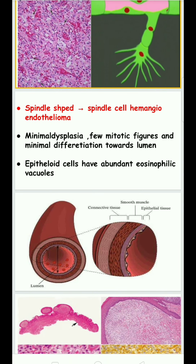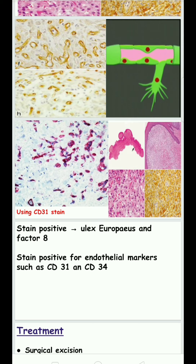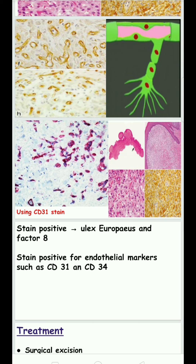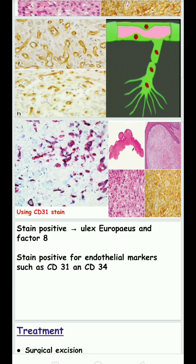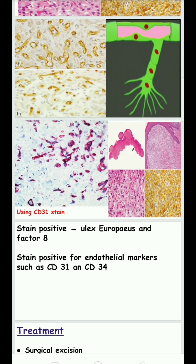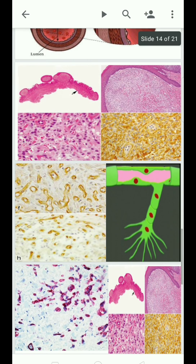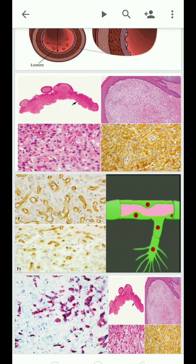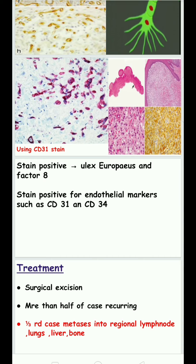The lesion stains positive for ulex europaeus and Factor VIII. Because hemangioendothelioma can be misdiagnosed as pyogenic granuloma or hemangioma, confirmatory staining using ulex europaeus, Factor VIII, CD31, and CD34 — all endothelial markers — is necessary. These stains confirm the diagnosis and reveal an increased number of mitotic figures and proliferating epithelial cells.